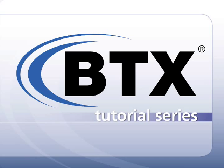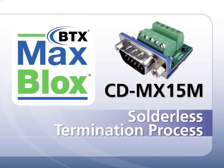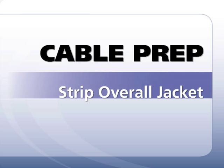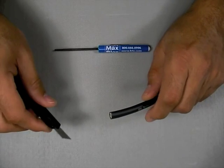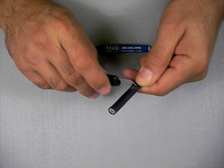This BTX video tutorial features the termination instructions for the MaxBlox solderless HD15 connector. The cable we're using is a 5-conductor mini coax with a stranded center conductor and dual shield.